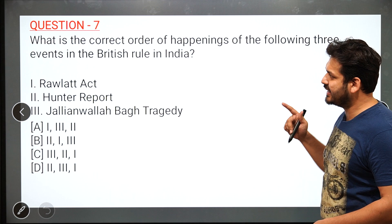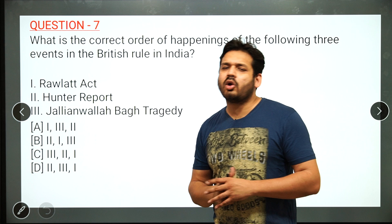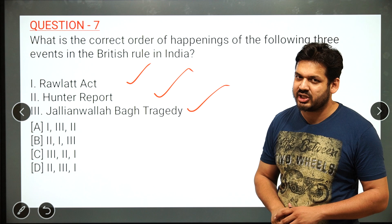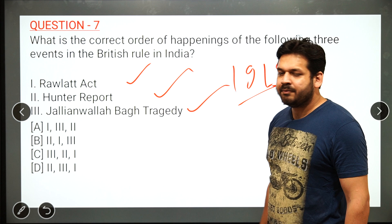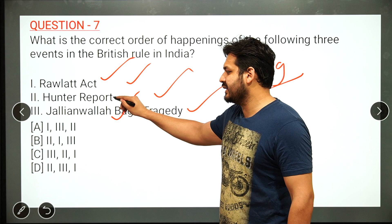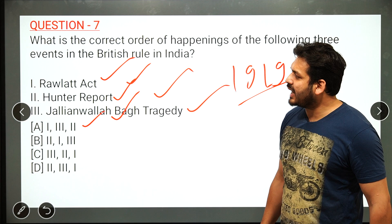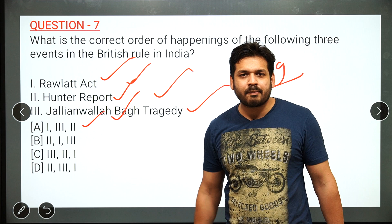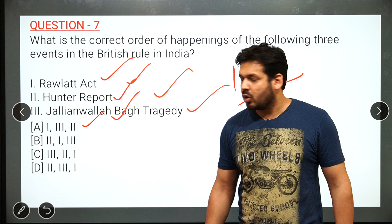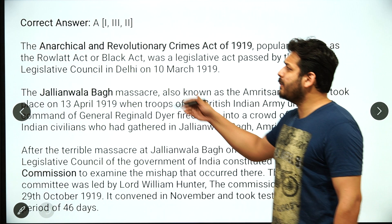Question 7 asks to arrange in chronological order: Rowlatt Act, Hunter Report, and Jallianwala Bagh tragedy — all three occurred in 1919. The answer is 1, 3, 2. Rowlatt Act came first in March 1919, then Jallianwala Bagh on 13th April 1919, and then the Hunter Report around October 1919.